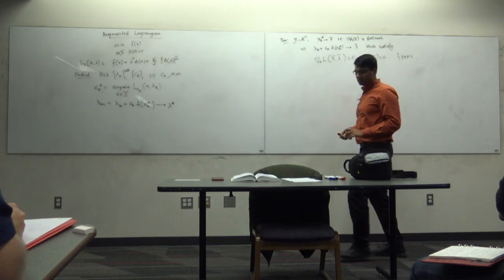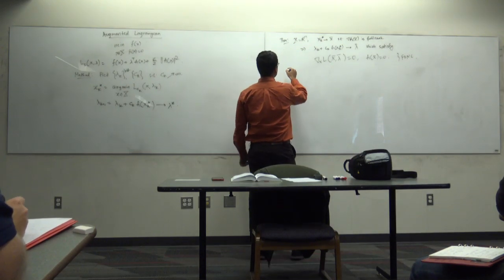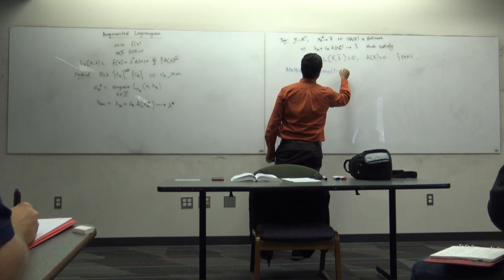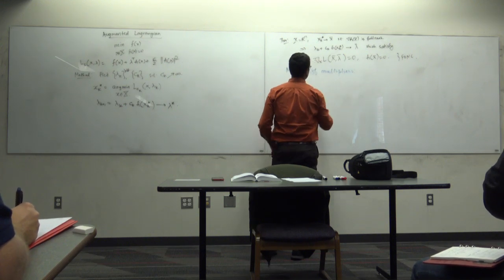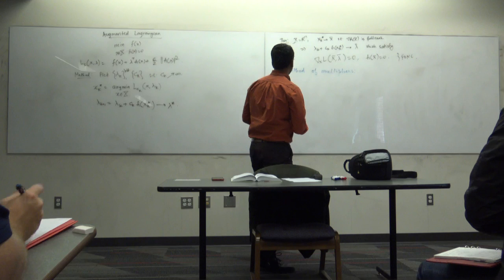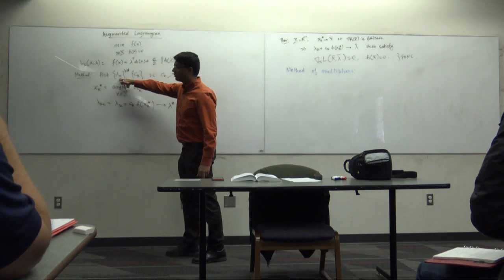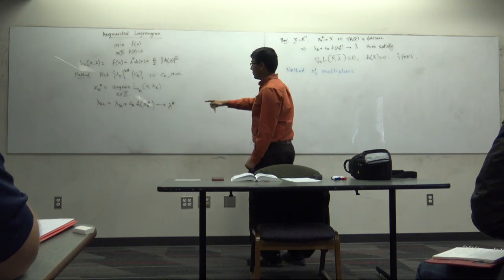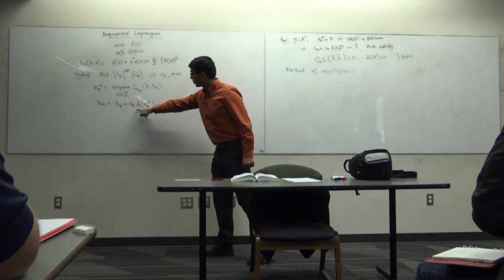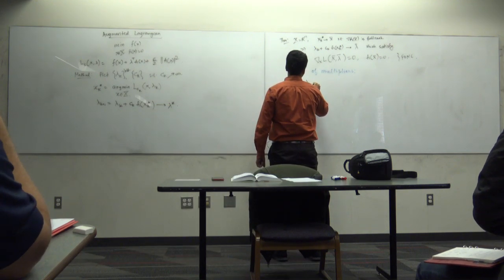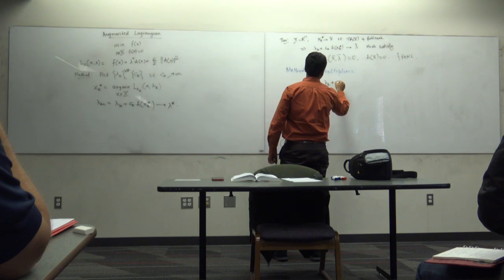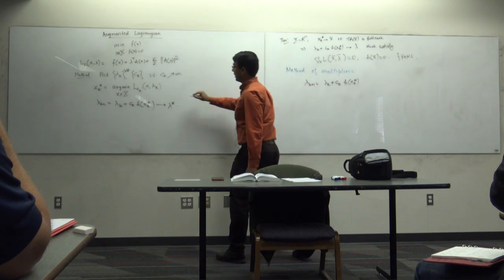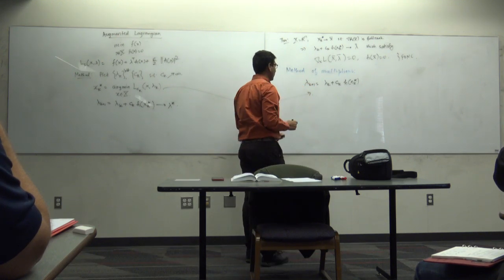The idea of the method of multipliers is that instead of picking any random bounded sequence of lambda_k, we pick lambda_{k+1} according to: lambda_{k+1} = lambda_k + c_k * h(x_k*), where x_k* is given by the arg min of the augmented Lagrangian.